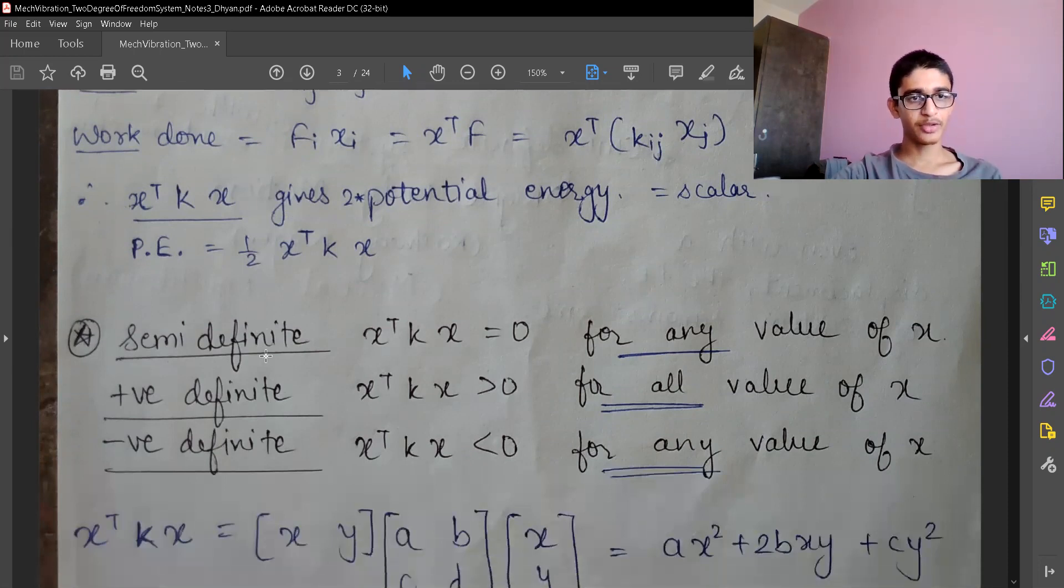Now let's start with positive definite. Positive definite matrix means X transpose K X is going to be greater than zero for all values of X. For all is the important term here - for all values of X.